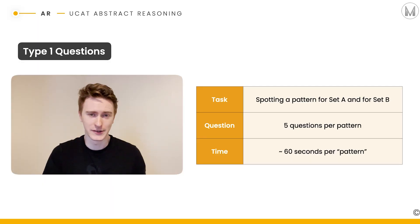Let's look first at type one questions. These are the ones you'll be familiar with because they're the most common type in abstract reasoning. You're given one set, set A, and another set, set B, and you're asked to find the pattern in each one. You're then given a series of test shapes and asked to allocate whether they go into set A or set B. Remember there are five questions per pattern, which gives you roughly 60 seconds per pattern.